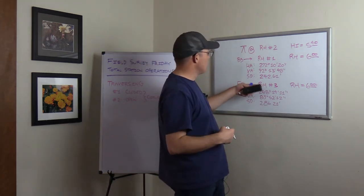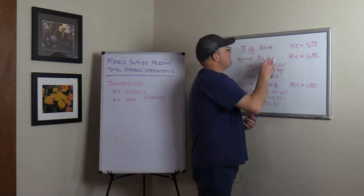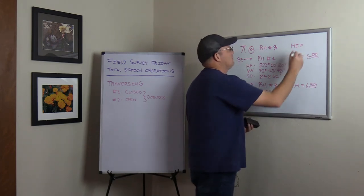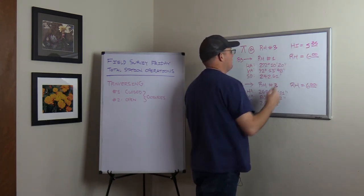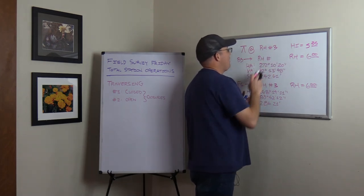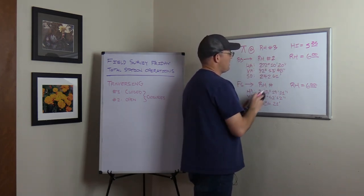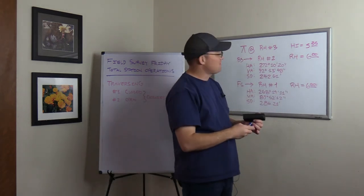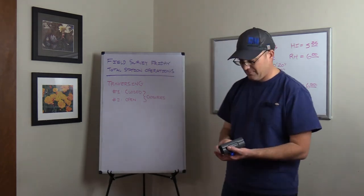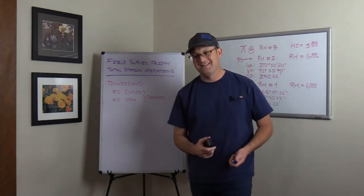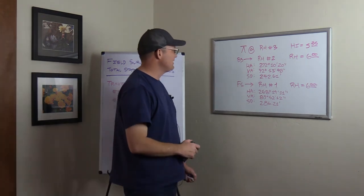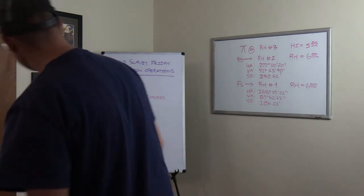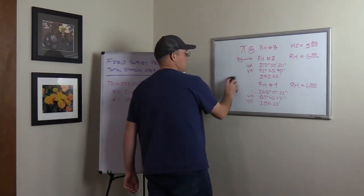Now in a traverse, we would then move up to three. This would be the same note format — instrument at RH number three, HI equals 5.35. We're backsighting now RH number two, and we're going to foresight RH number four. You'd write down these angles. I'm going to do a problem set where you have to read and interpret some traverse notes. And I guess I've got to do some videos on calculating linear and angular misclosures on open and closed traverses. We'll do that for you guys.